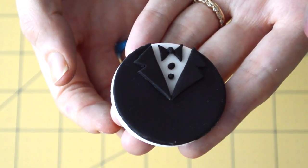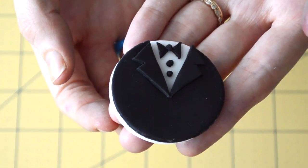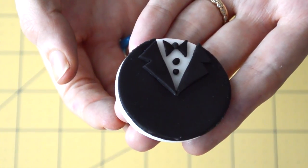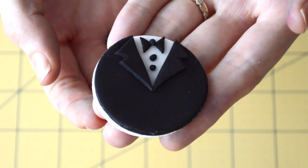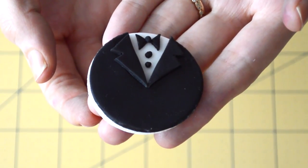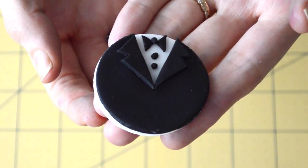We have our completed tuxedo topper, and I just think that is the cat's meow right there. I just love it. It comes together beautifully. Stay tuned for part two to learn how to make the formal dress cupcake topper. Thanks for tuning in.